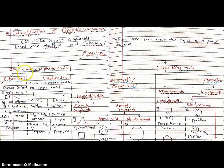First, the open chain or aliphatic hydrocarbons are known as long chain, straight chain, and slightly branched chain hydrocarbons without any cyclic ring. Aliphatic means linear, straight chain, and slightly branched chain hydrocarbons without any cyclic ring. These aliphatic hydrocarbons are further classified into two main types: saturated and unsaturated.